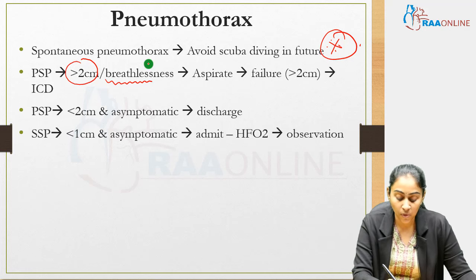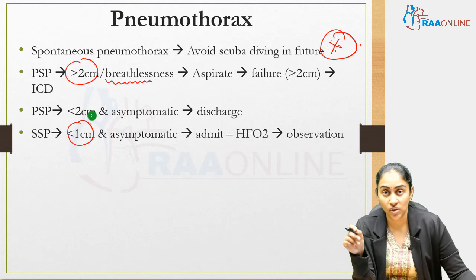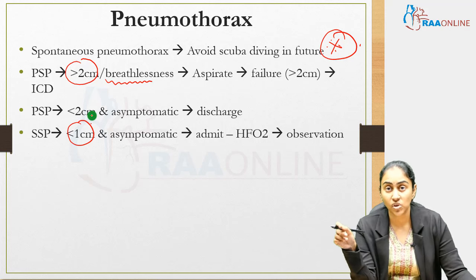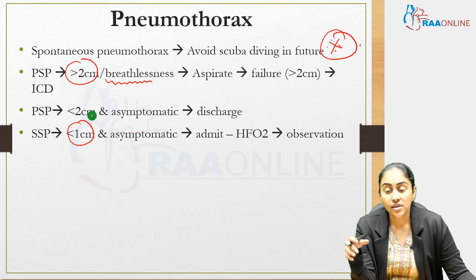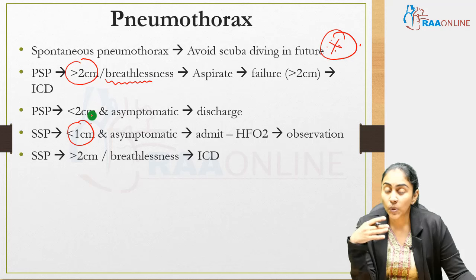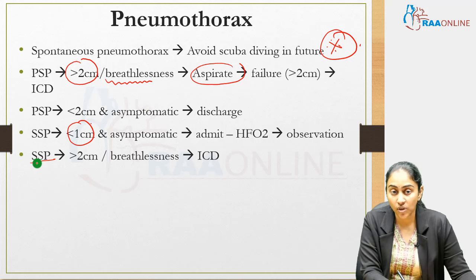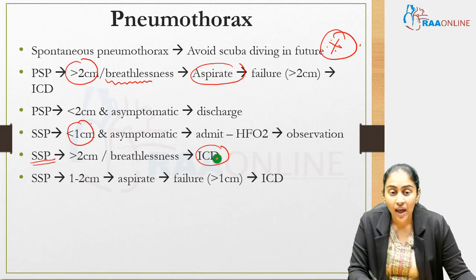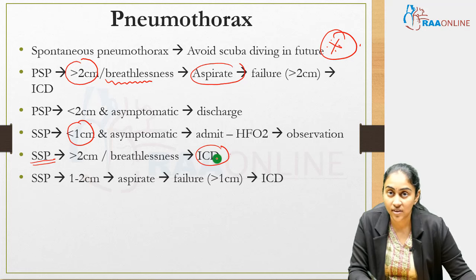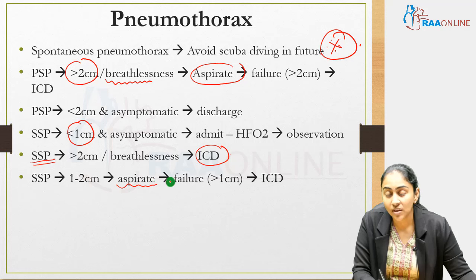For secondary spontaneous pneumothorax, the cutoff is one centimetre. Even if size is less than one centimetre and the patient is asymptomatic, admit, start high-flow oxygen, and observe. If size is more than two centimetres or the patient is breathless, go directly to ICD — not aspiration. Aspiration is used for the intermediary range of one to two centimetres; if aspiration fails (still more than one centimetre), proceed to ICD.